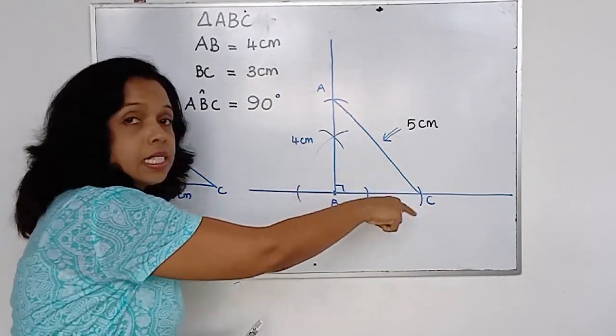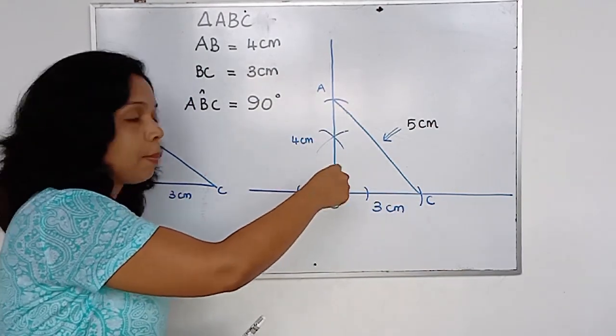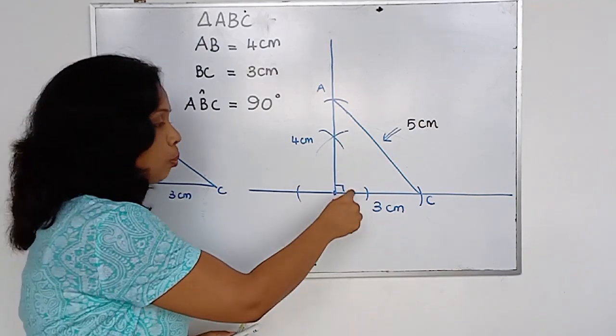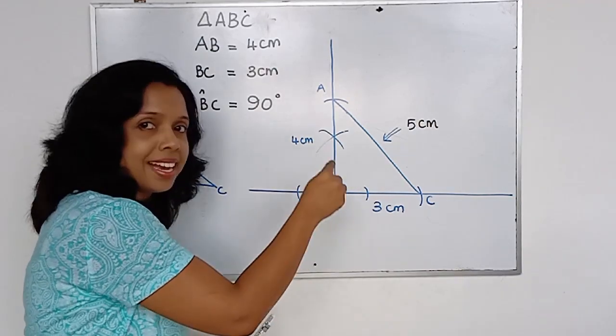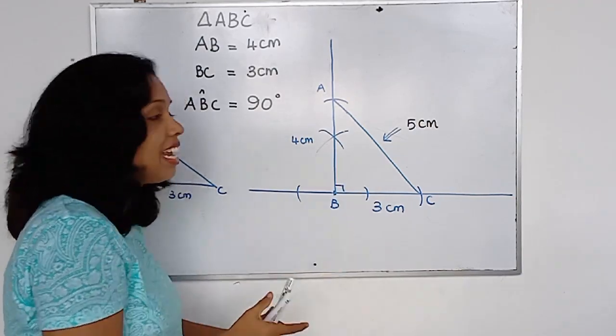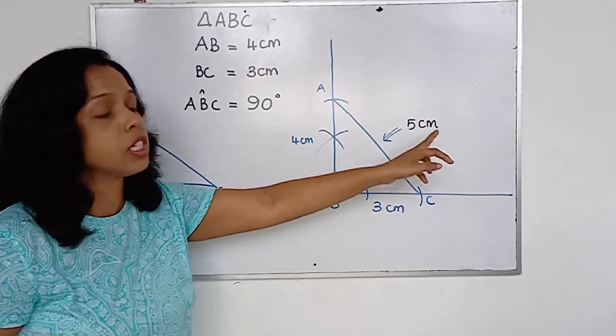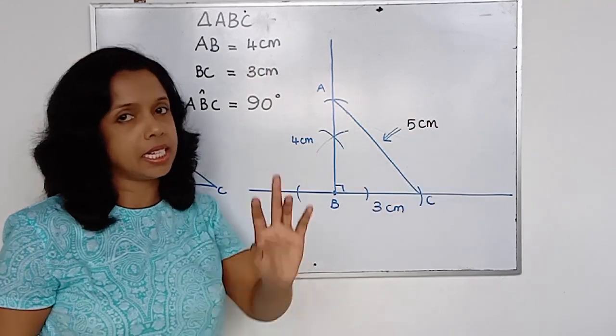So this is a triangle and one angle is 90 degrees, so this should be a right angle triangle. And the hypotenuse value is 5 centimetres.